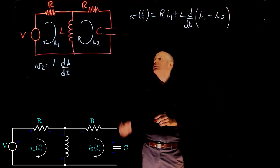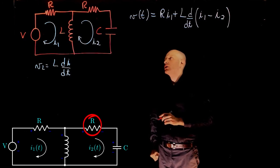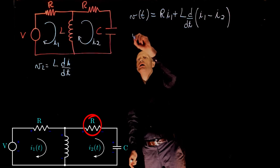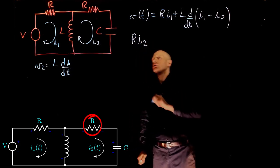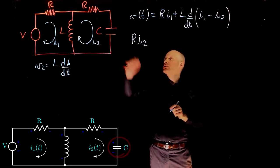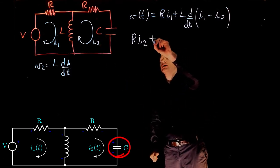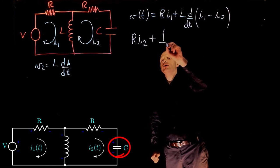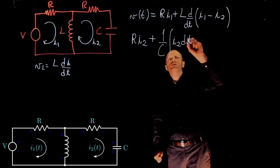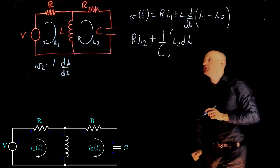Starting with this resistor here, the voltage drop across the resistor is R times the current I2. We now go to the capacitor. The voltage across the capacitor is 1 over C integral of the current I2 dt, integral of I2 dt.